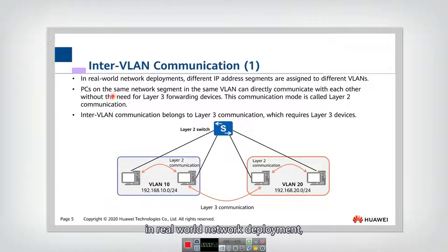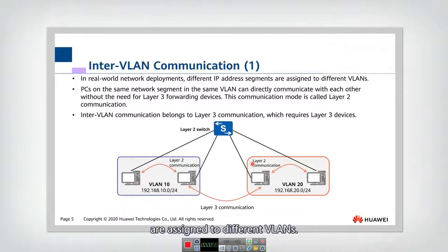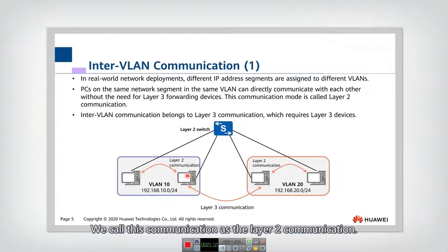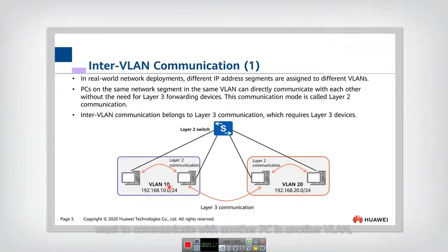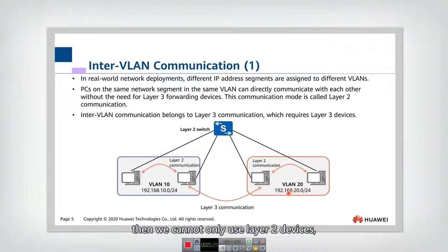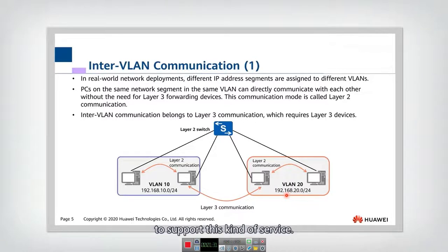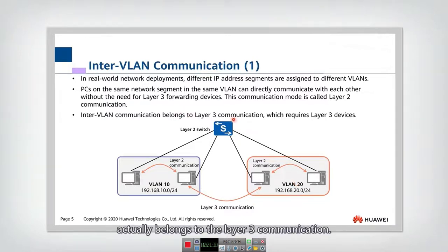In real-world network deployment, different IP address segments are assigned to different VLANs. If multiple PCs in one VLAN can communicate directly with each other through layer-2 devices — for example, a layer-2 switch — we call this layer-2 communication. However, if one PC in one VLAN wants to communicate with another PC in a different VLAN, then we cannot only use layer-2 devices. Instead, we need layer-3 devices to support this kind of service. So inter-VLAN communication actually belongs to layer-3 communication, and requires layer-3 devices.